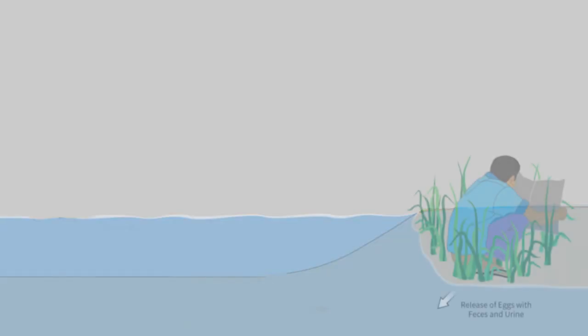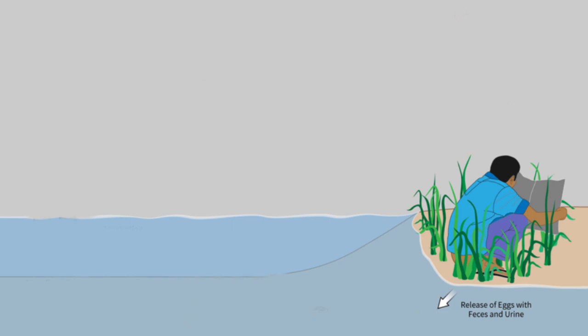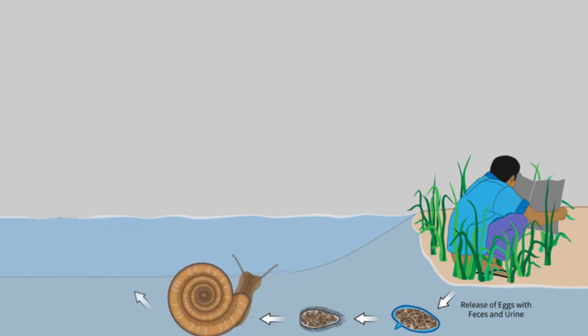Fresh water becomes contaminated by schistosoma eggs when infected people urinate or defecate in the water. The eggs hatch, and if certain types of freshwater snails are present in the water, the parasites develop and multiply inside the snails. The parasite leaves the snail and enters the water, where it can survive for about 48 hours.